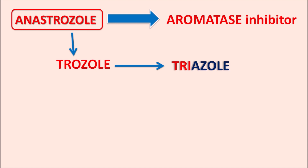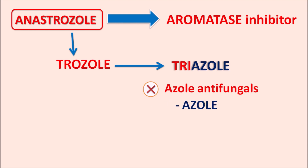We have a few drugs which are having imidazole as well as triazole ring systems. They are classified as azole antifungals. But anastrozole is not an azole antifungal, because azole antifungals can be differentiated from aromatase inhibitors by a little difference in their suffix. Azole antifungals like ketoconazole and clotrimazole all end with the suffix 'azole'. But anastrozole has the letter 'o' instead of 'a', so it is 'ozole'.